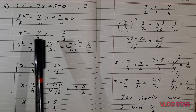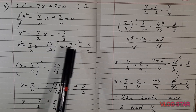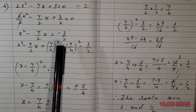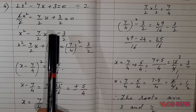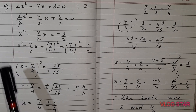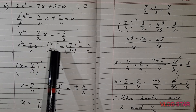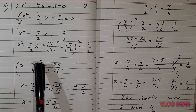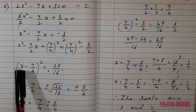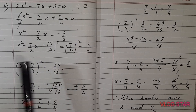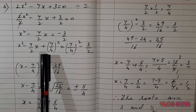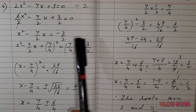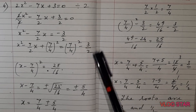Take the square of 7/4 and add to both sides of the equation. So x² - (7/2)x + (7/4)² on both sides: (7/4)² = (7/4)² minus 3/2 on the right. These three terms on the left can be written as (x - 7/4)² because it is in the form of (a - b)² = a² - 2ab + b².